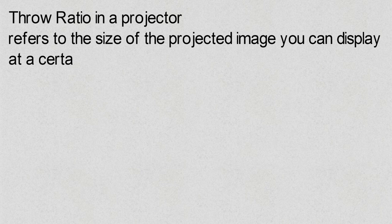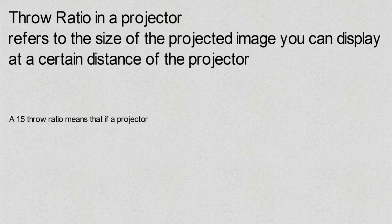What is throw ratio? Throw ratio in a projector refers to the size of the projected image you can display at a certain distance of the projector. A 1.5 throw ratio means that if a projector is 1.5 feet away from the projector screen, the projected image has a 1 foot width.